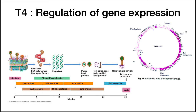Instead, T4 gene expression happens in waves. Early in infection, proteins are expressed that shut down host operations and prepare the host cell for viral replication. In the middle phase, DNA polymerases are made that copy the phage DNA — this virus makes its own DNA polymerase. In the late phase, viral capsid proteins are made and assembled. Very late in the process, the two lysis proteins are synthesized to allow the virus to exit the cell.